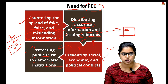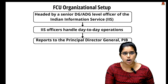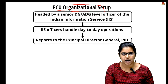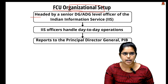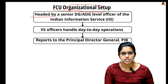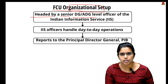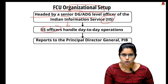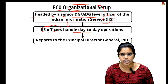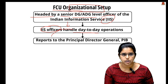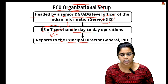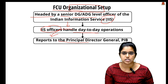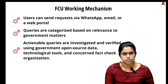Regarding the organizational setup of the Fact Check Unit: the main head is a Senior DG or ADG level officer from the Indian Information Service. Under them, IAS officers handle day-to-day operations in each unit, and they report to the Principal Director General of the PIB, which is the Press Information Bureau.